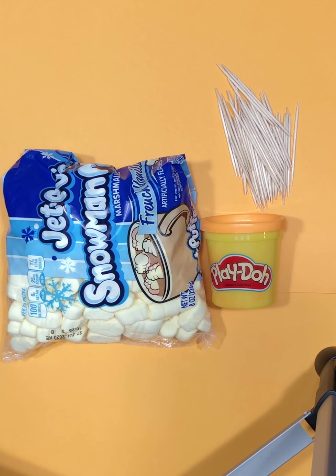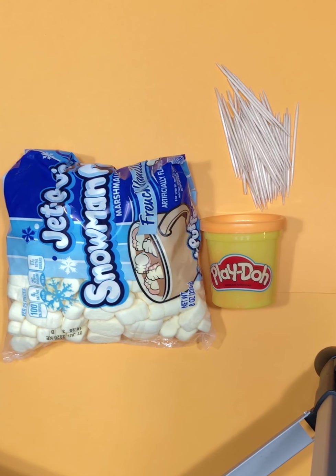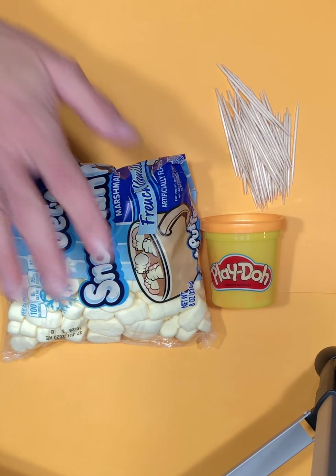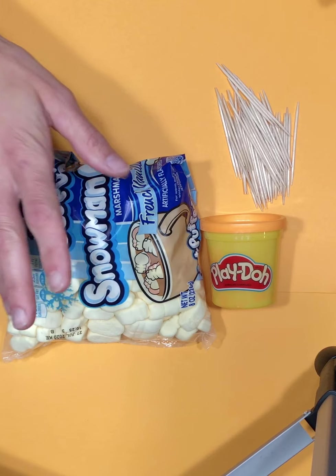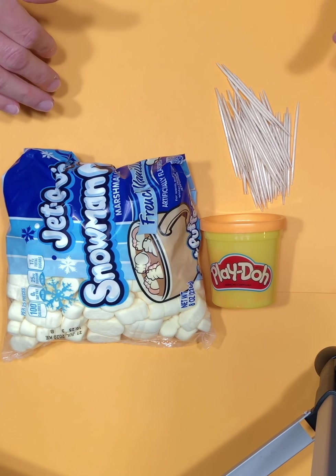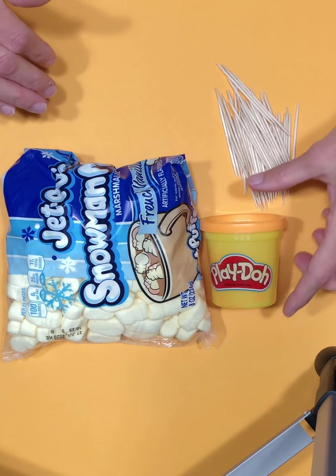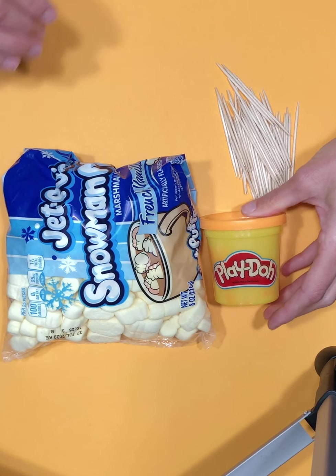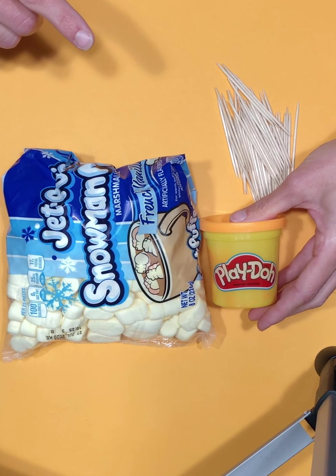You could use clay, anything you have at home that you think might hold together these toothpicks. If you have different types of materials you want to use, I recommend using one at a time. So if you're going to use marshmallows, use all marshmallows for one tower and then you can either take that one apart and reuse the toothpicks or use new toothpicks and start a new tower with a different material.